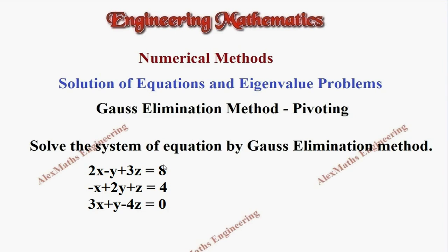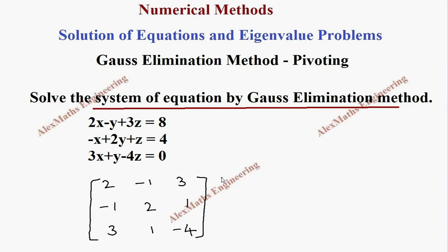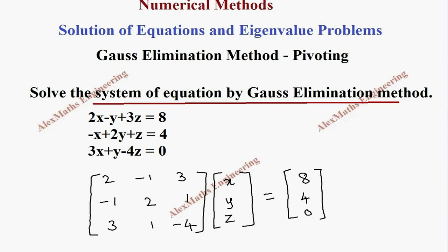Hi students, this is Alex. In this video we are going to solve the system of equations by Gauss elimination method. The given equations should be written as a product of matrices, so we take all the coefficients of x, y, and z — which is 2, -1, 3, -1, 2, 1, 3, 1, -4 — as matrix A, multiplied with the column matrix [x, y, z] and equated to another column matrix. So the given equation is written as a product of matrices.